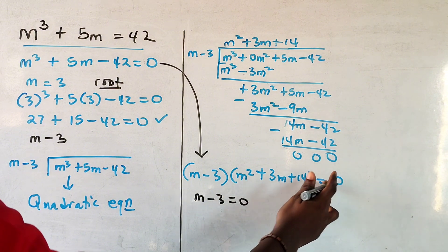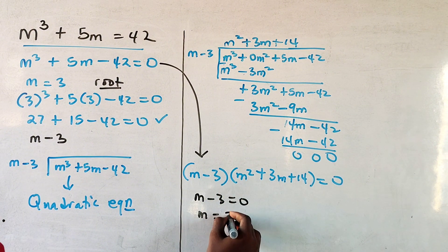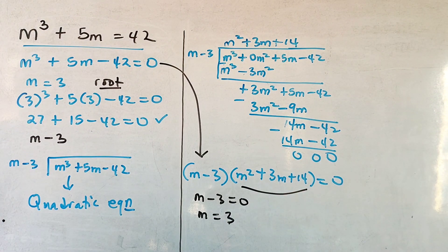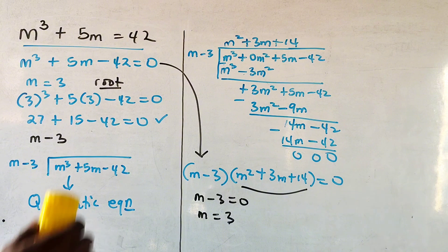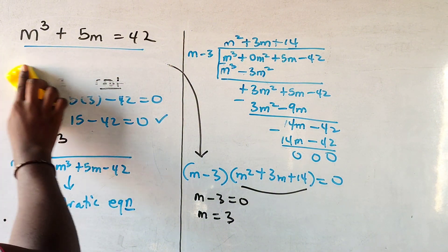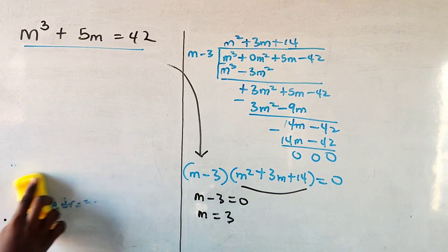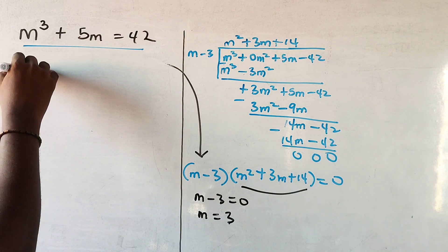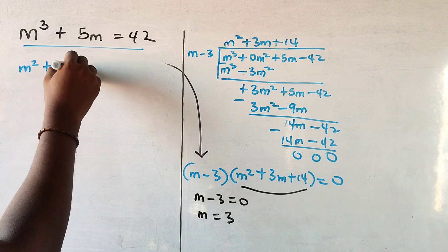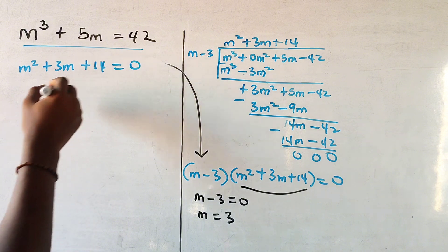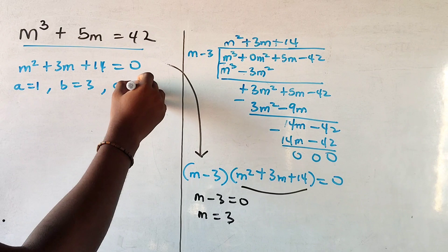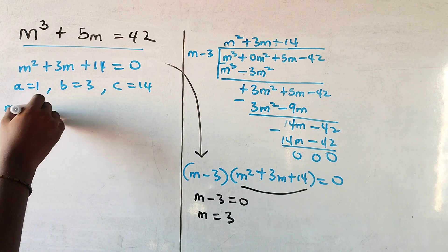So we can easily get the linear expression, equate it to 0, and get 3. For the quadratic equation here, we need to use quadratic methods to solve it. That's what we're going to do next. So let's get rid of this and solve the quadratic equation. So we go m squared plus 3m plus 14 equals 0. I'm going to say a equals 1, b equals 3, c equals 14.